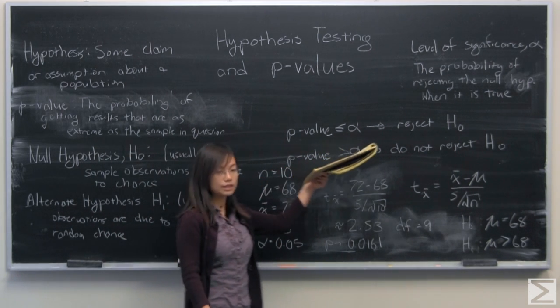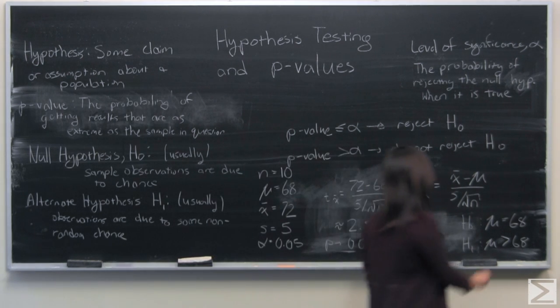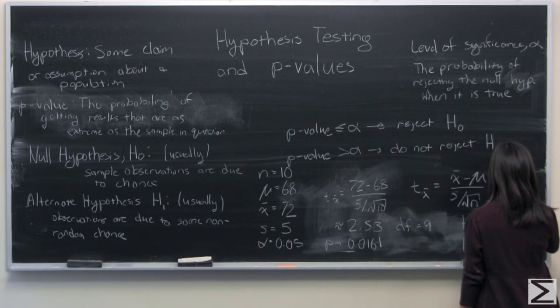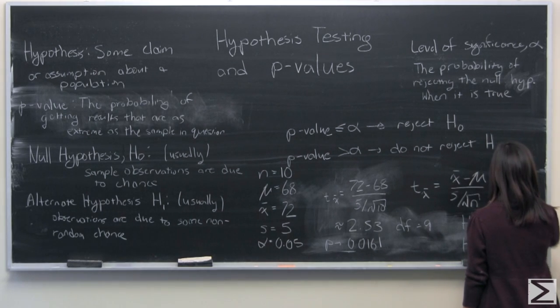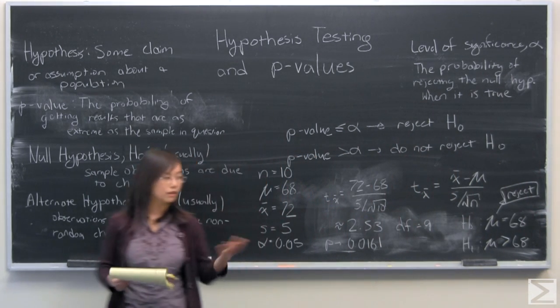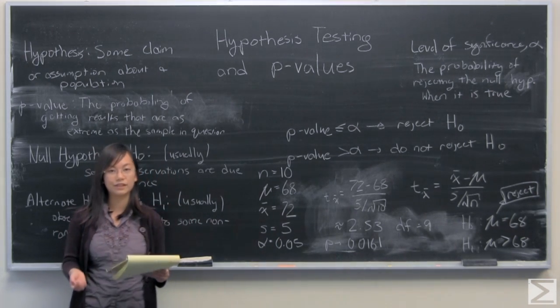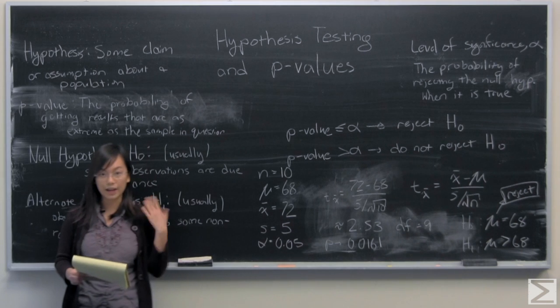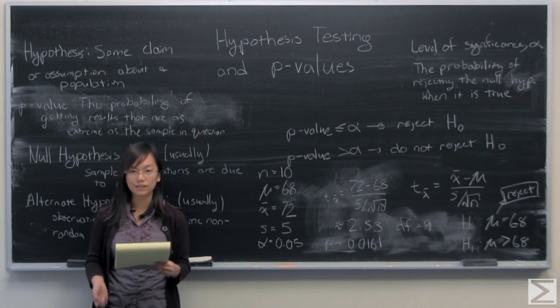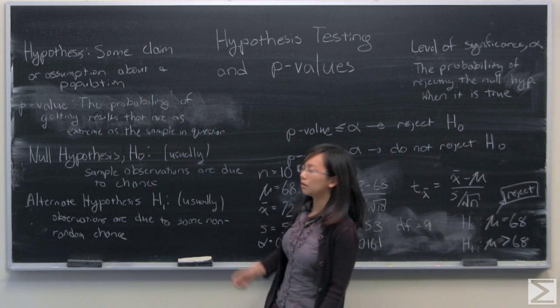Since our p-value is lower, less than or equal to alpha, we then reject the null hypothesis and conclude that the sample mean for this is indeed different or very, very likely different than the actual mean of the population. And that is how to use hypothesis testing with the p-values. It's very useful in real life.